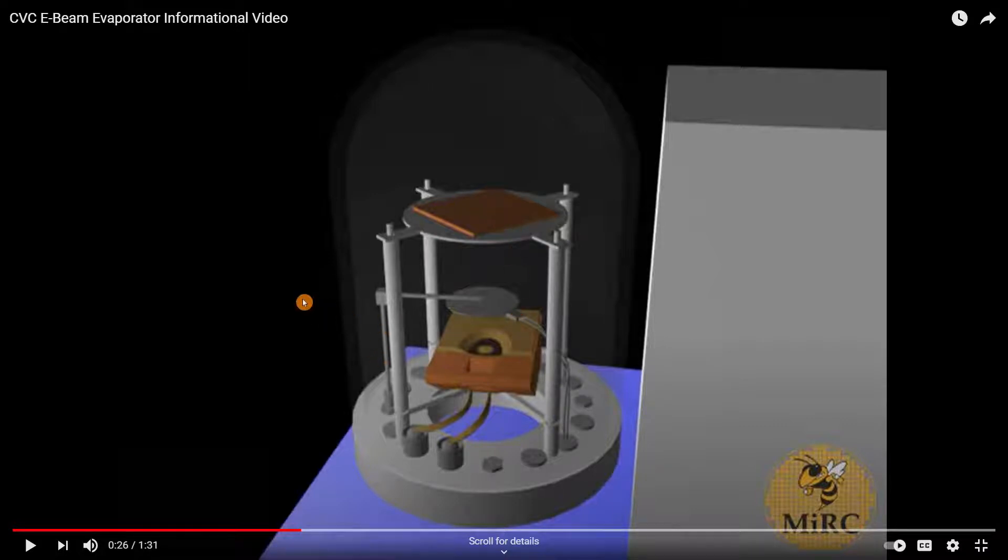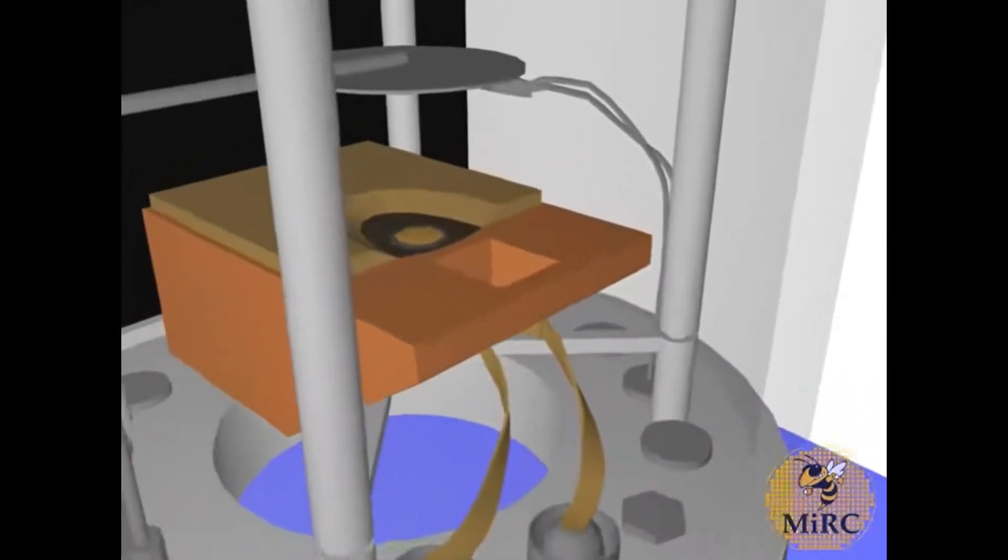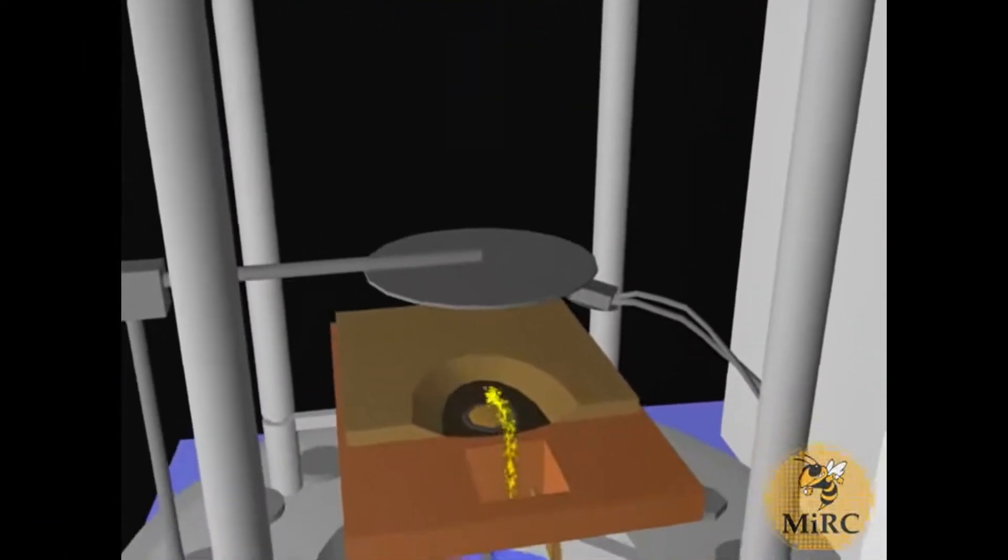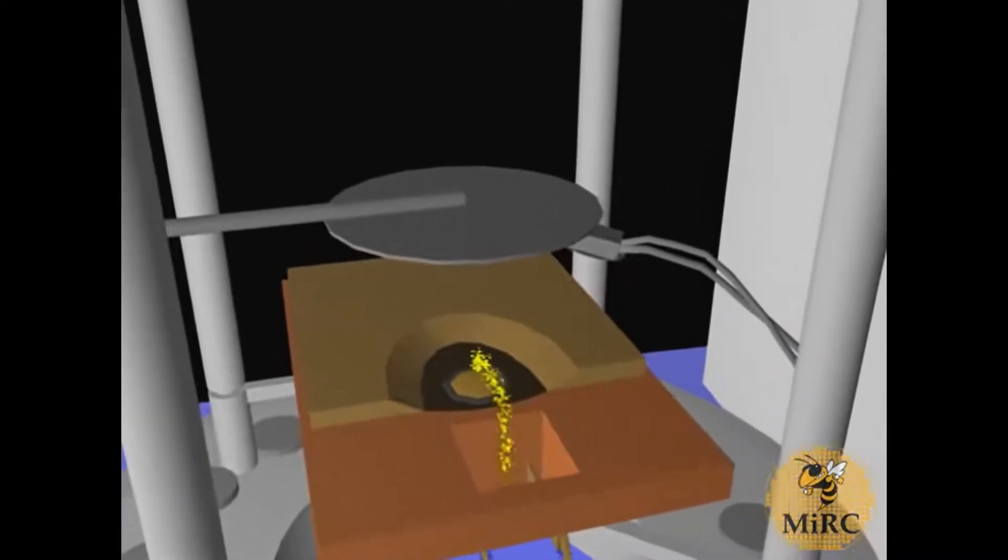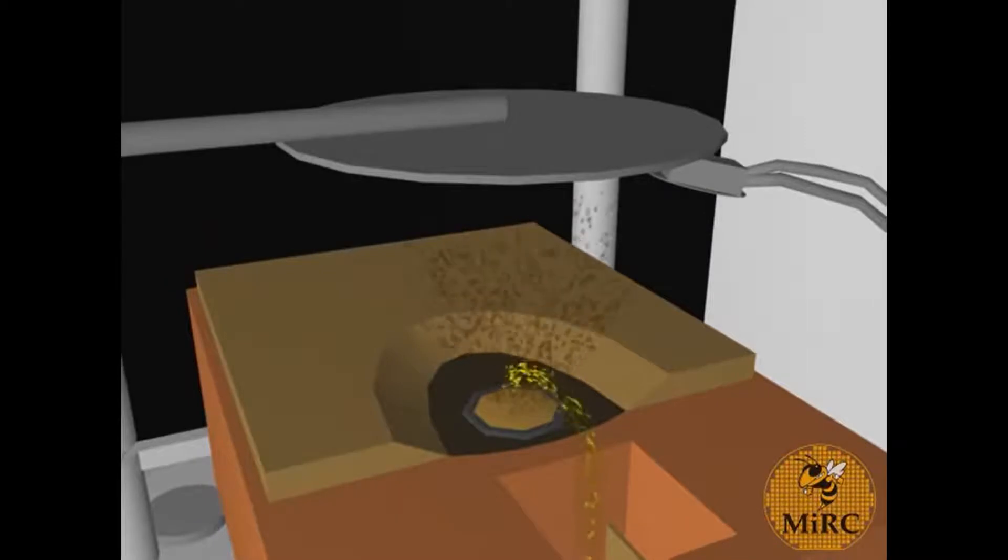Let's continue the video. The chamber is pumped to a very low pressure. The machine then releases electricity through a filament. Several magnets are used to direct the electron beam from the filament to a crucible containing the target metal. The metal then heats up and begins to evaporate onto the shutter.